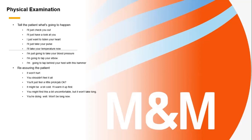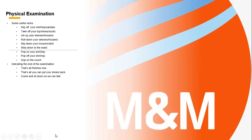Assurance is quite important when performing any physical examination. There are some useful phrases: 'slip off your shirt,' 'top or sandals,' 'roll up your sleeve,' 'slip down your trousers,' 'pop off your shirt,' 'hop onto the couch.' Once the examination is concluded, say: 'Please take your shirt back and come back and sit down.' Try to include some of these statements in the speaking part. The most important element remains empathy.